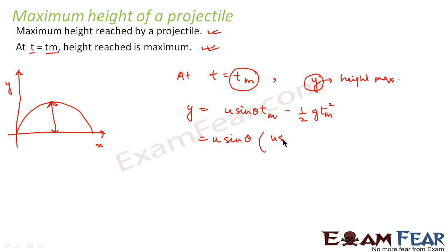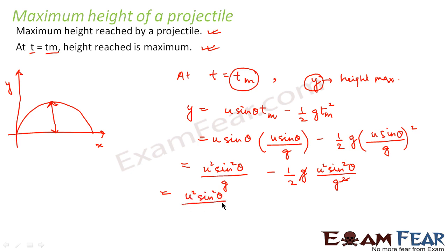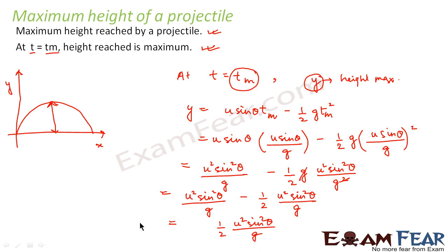t_m is equal to u·sinθ / g. Substituting: y = u·sinθ·(u·sinθ/g) − ½g·(u·sinθ/g)². This gives u²sin²θ/g − ½·g·u²sin²θ/g², and the g cancels to give u²sin²θ/g − ½·u²sin²θ/g, which equals ½·u²sin²θ/g. So the maximum height that a projectile can reach is H = u²sin²θ / 2g.